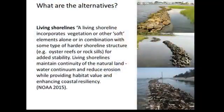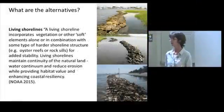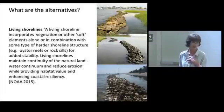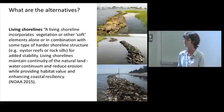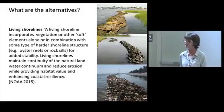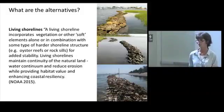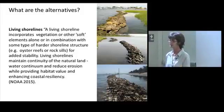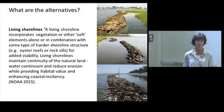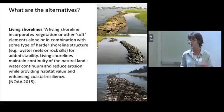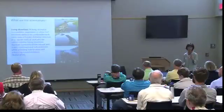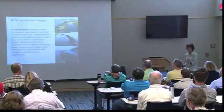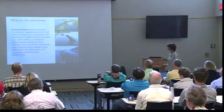Living shorelines offer a way to mitigate habitat loss from shoreline hardening. The approach includes vegetation and/or soft elements, possibly combined with harder structures such as an oyster reef or rock sill. The goal is to maintain the natural land-water continuum, reduce erosion for waterfront property owners while providing habitat value, and increase resilience — these systems are often more resilient than hardened shorelines.